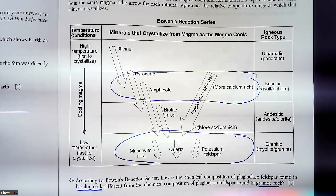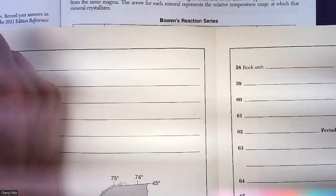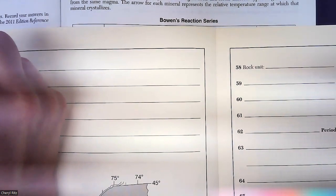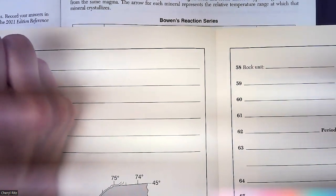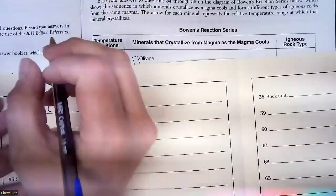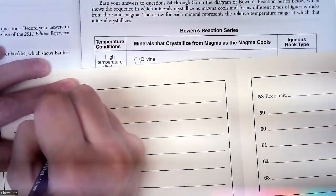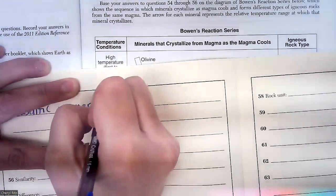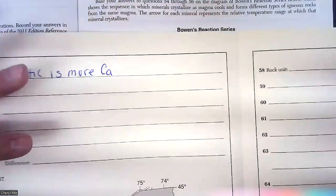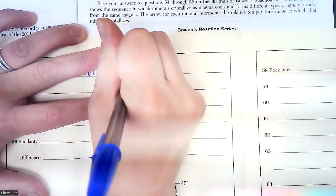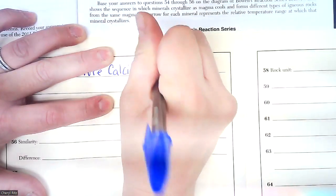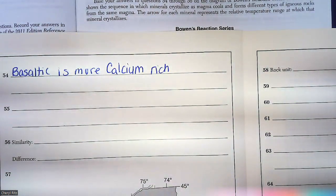Question 55. What would you have written for 54? Basaltic is more calcium — they said calcium. That's literally all you had to write for that.